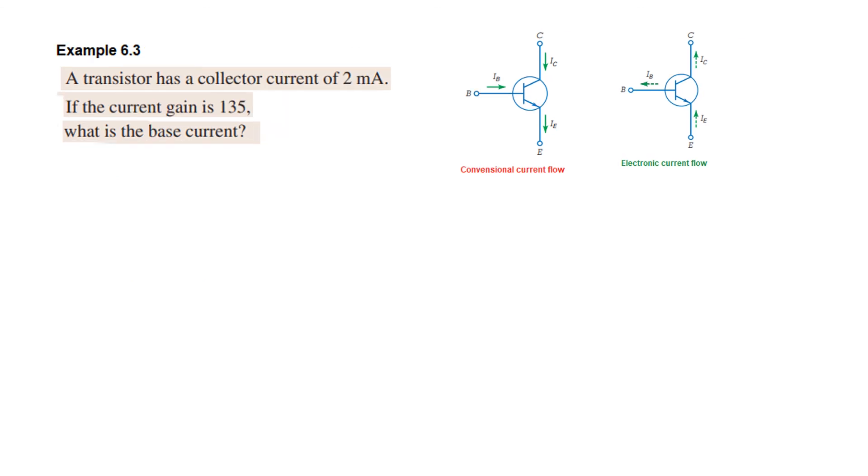And the last question is that the transistor has a collector current of 2 milliampere and its current gain is 135. Now we need to find the base current. So again simple. IC is given, beta DC is given.